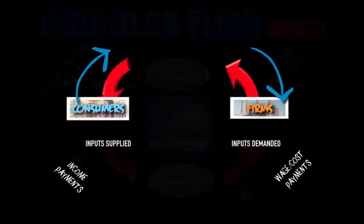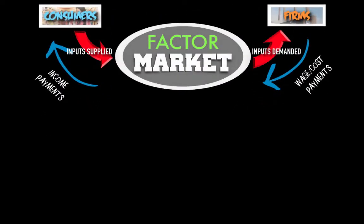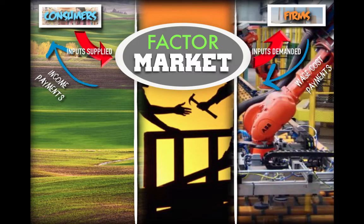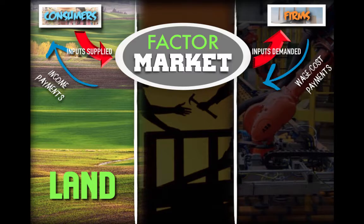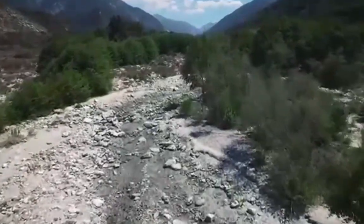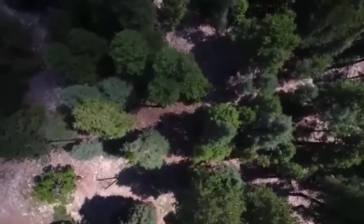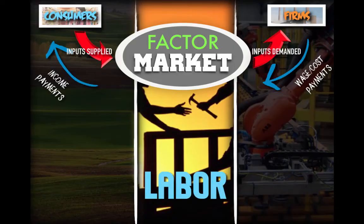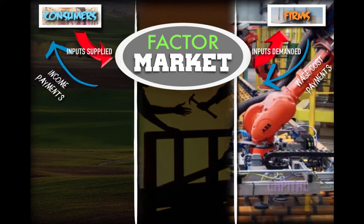Let's take a closer look at the Factor Market. The Factor Market is the location where factors of production are exchanged between consumers and firms. There are three factors of production bought and sold in the factor market: land, labor, and capital. Land is defined as the natural resources used to produce goods and services — it cannot be artificial or manufactured by man. Labor refers to the tasks and jobs performed by workers and the workers themselves.